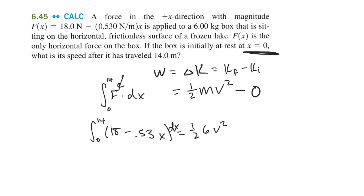So the first thing we need to do, oh, I forgot my dx. The first thing we need to do is solve this integral. When you integrate that, you're going to get 18x minus 0.53 over 2 times x squared. And that goes from 0 to 14. And that equals 1-half times 6 is 3v squared.